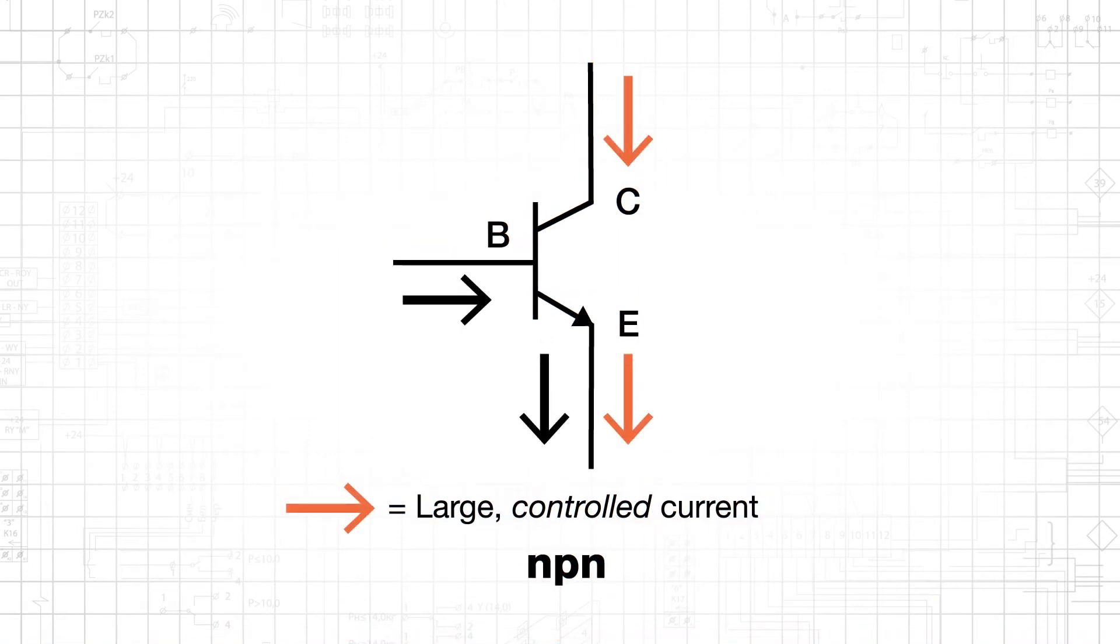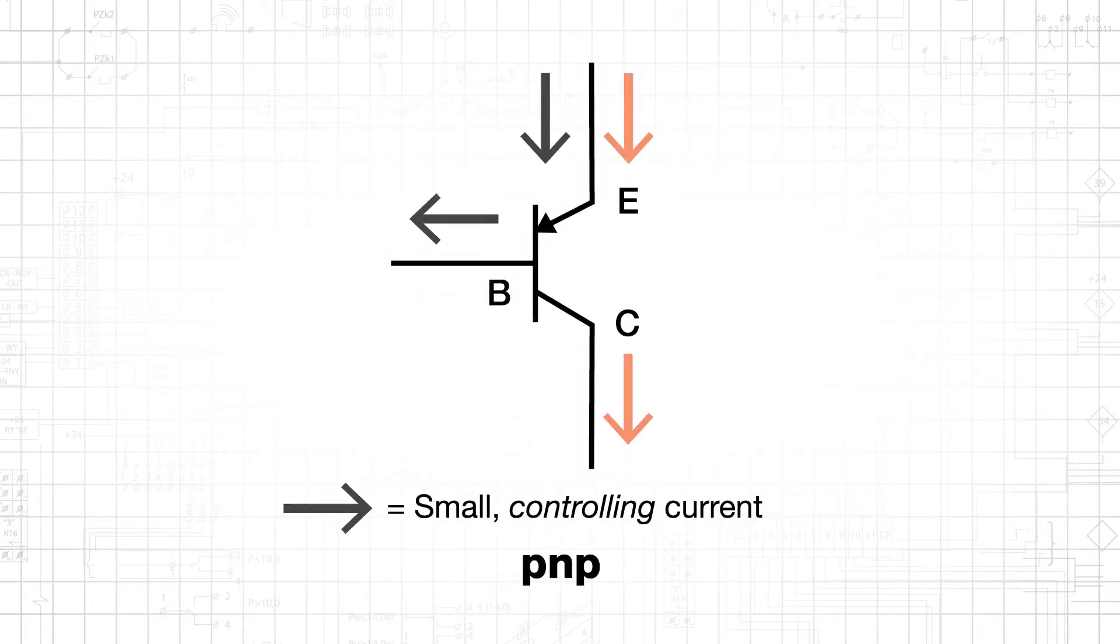In an NPN transistor, the controlling current flows from the base to the emitter, and the regulated current flows from the collector to the emitter. In a PNP transistor, the controlling current flows from the emitter to the base, and the regulated current flows from the emitter to the collector.